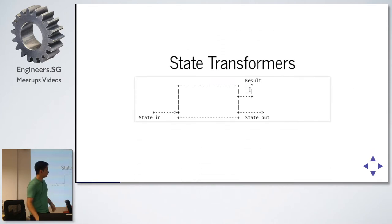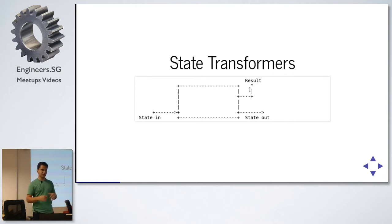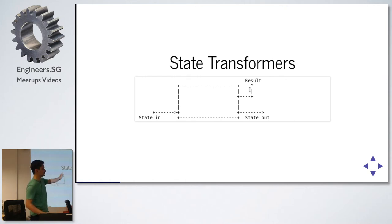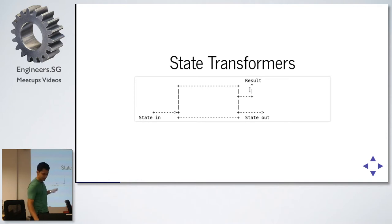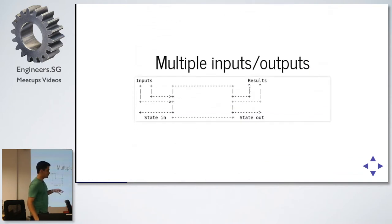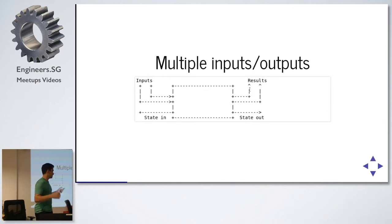So how do we do that? In this paper, the authors introduced the notion of a state transformer. Just think of it as a box: put some state in, you get some state out, and you get some result. This generalizes nicely to multiple inputs and outputs, since Haskell has tuples. Again, you put some state in, some inputs, some state out, and some results.